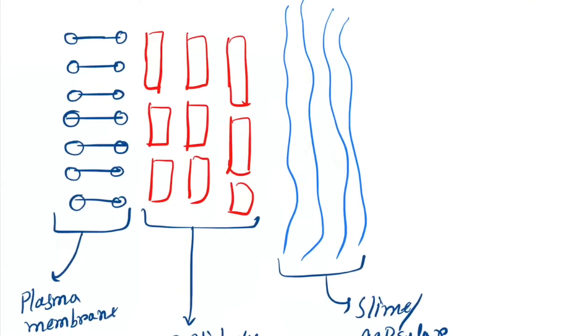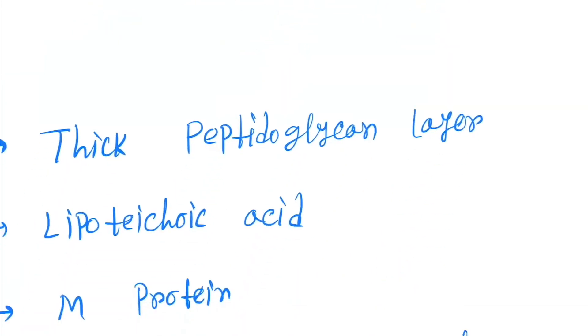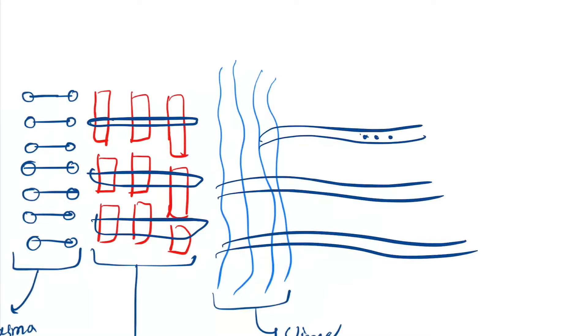Next one is the lipoteichoic acid. This is the lipoteichoic acid. Next is M protein. First you have to know these are the fimbriae, and in fimbriae there are presence of the M proteins.